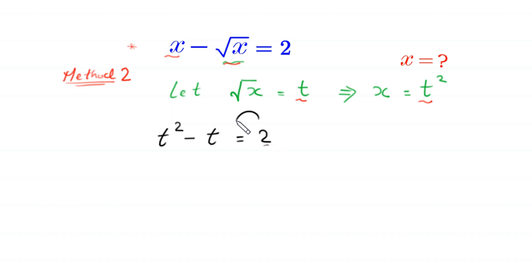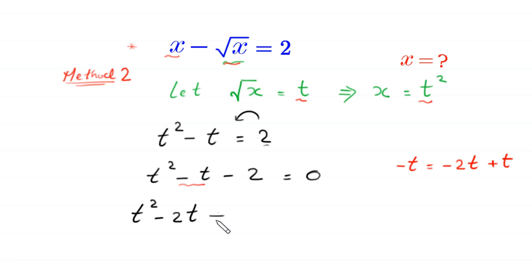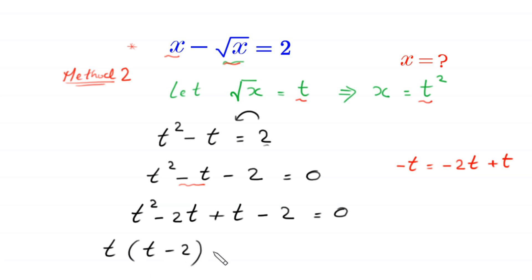Moving 2 to the left hand side, this becomes t squared minus t minus 2 is equal to 0. This negative t can be written as negative 2t plus t, so we rewrite the equation as t squared minus 2t plus t minus 2 is equal to 0. From the first two terms we factor out t, leaving t minus 2, and from the last two terms we factor out plus 1, also leaving t minus 2. It is equal to 0.